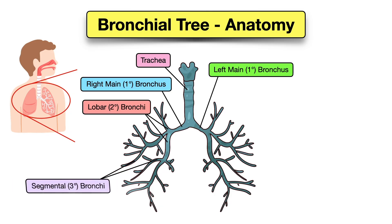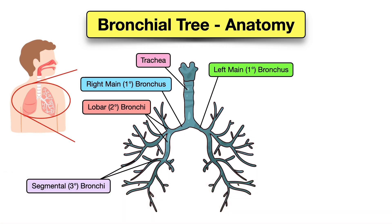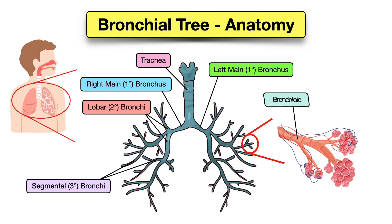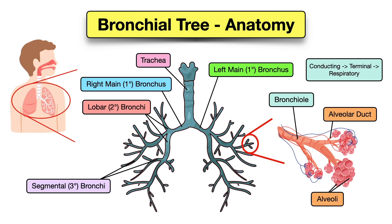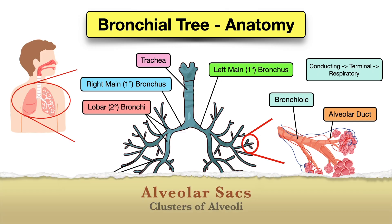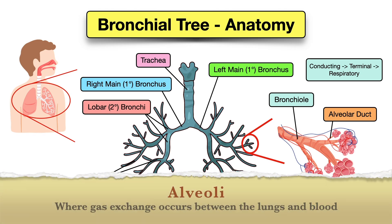The lobar bronchi then divide into segmental bronchi, also called tertiary bronchi, which supply air to specific segments within each lobe of the lung. The segmental bronchi divide into even smaller airways called bronchioles. Conducting bronchioles branch into terminal bronchioles, which branch into respiratory bronchioles. These terminate in alveolar ducts connecting to alveolar sacs — clusters of alveoli — where gas exchange occurs between the lungs and blood.